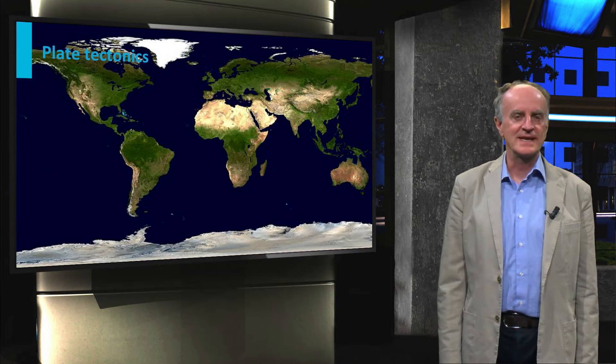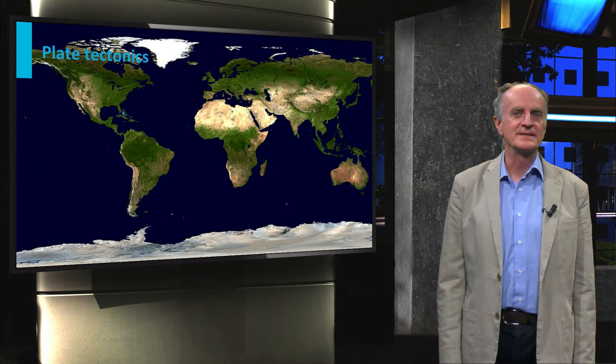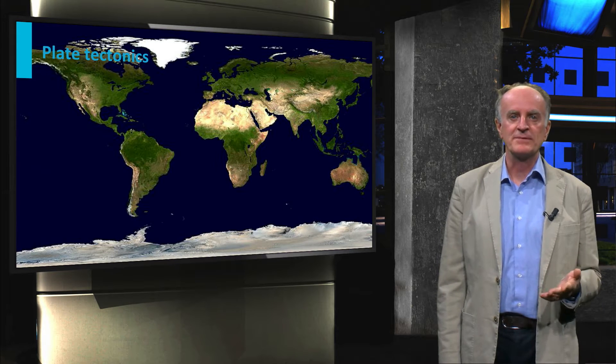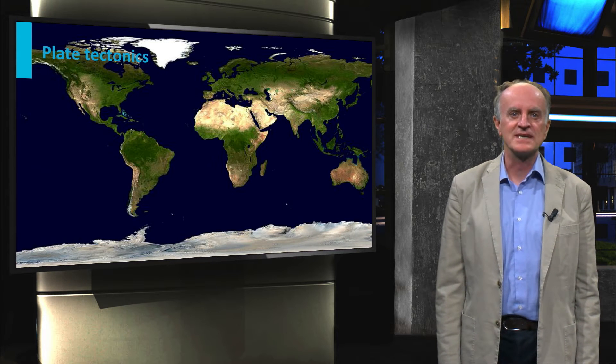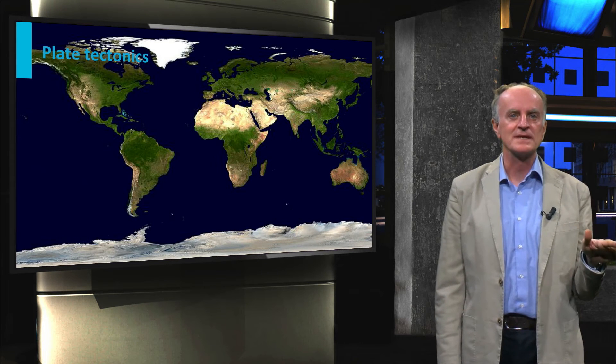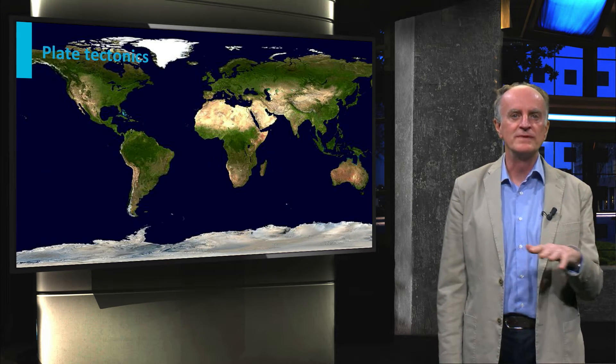The object of today's class is plate tectonics, a powerful theory which allows us to explain and predict a large number of phenomena taking place in the earth. The similarity of the shapes of South America and Africa across the Atlantic has struck the imagination of scientists since centuries, and it is a clear demonstration that parts of the earth, thousands of kilometers across, can easily move around the earth.